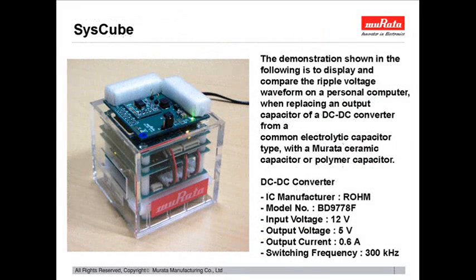This is the SISC cube. The SISC cube consists of the main body, main board, and a subboard, and the capacitor to be evaluated is mounted on the subboard. Various capacitors can be evaluated by replacing the subboard. The specification of the DC-DC converter has an output voltage of 5 volts and a switching frequency of 300 kilohertz.